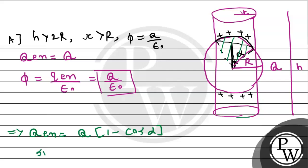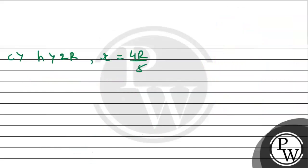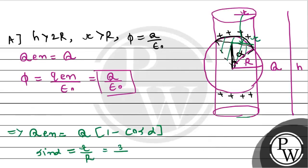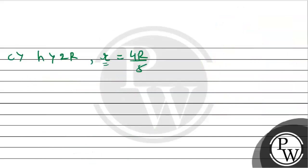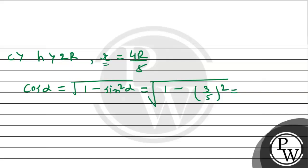From the figure, the distance from center to the cylinder edge equals the radius of the cylinder, which is small r, and the hypotenuse equals capital R. For Option C, r equals 4R/5. So sine alpha equals r/R = 4/5. Using trigonometry, cosine alpha equals under root of (1 minus sine squared alpha) = under root of (1 minus (3/5) squared). The charge enclosed for the region h > 2r and r = 4R/5 will be 2Q divided by 5.